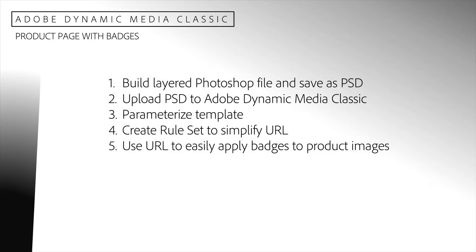In this presentation, we will demonstrate a simple process for preparing basic templates that will allow us to easily add badges to product images. First, we will build a layered Photoshop file containing a product image and badges and save it as a Photoshop PSD file. Then, we will upload our PSD file to Adobe Dynamic Media Classic, which will automatically convert it to a template. We will then use Adobe Dynamic Media Classic to edit and parameterize it. Then, we'll demonstrate how the template works. We'll create a rule set to simplify the URL request, which specifies the product image and badge.